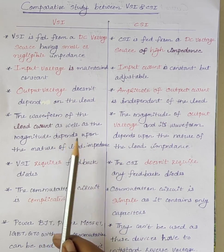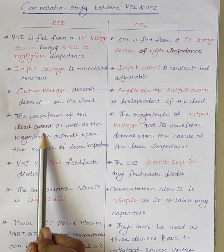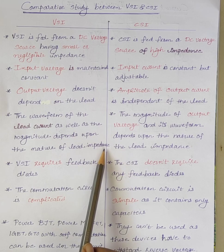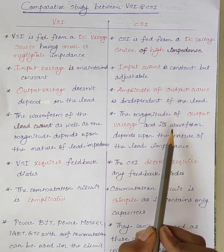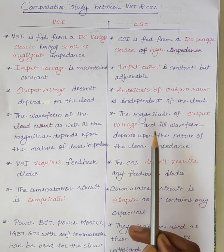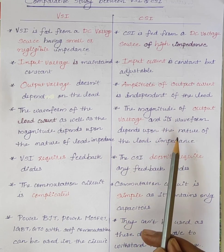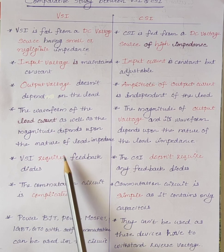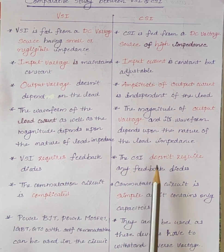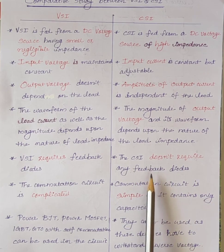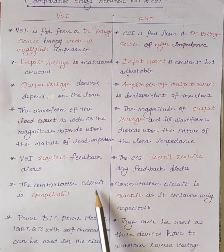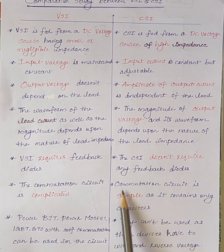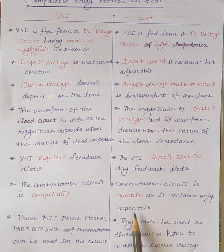In voltage source inverter, the waveform of the load current as well as its magnitude depends upon the nature of load impedance. But in case of current source inverter, the waveform of the output voltage and its magnitude depends upon the nature of load impedance. Voltage source inverter requires feedback diodes, but current source inverter does not require any feedback diodes. Also, the commutation circuit is complicated in case of voltage source inverter, but in current source inverter, the commutation circuit is simple as it contains only capacitors.